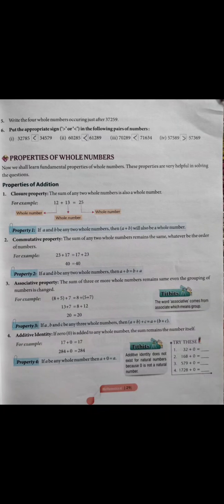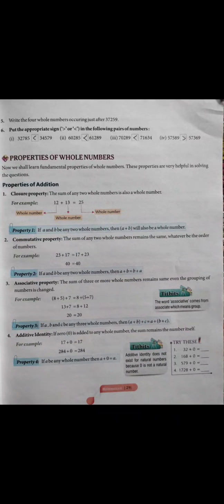Next question: write the four whole numbers occurring just after 37,259. Just after ka means iske baad waale char whole numbers likhne hain: 37,260, 37,261, 37,262, aur 37,263 — yeh hamare four whole numbers ho gaye.